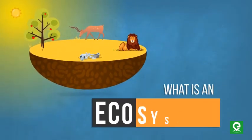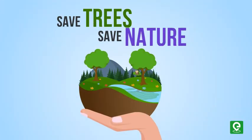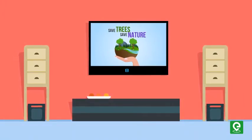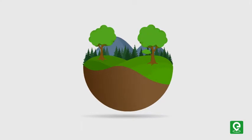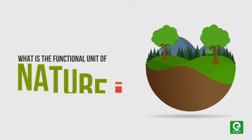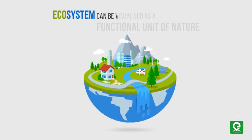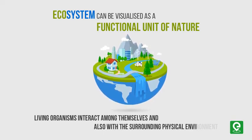What is an ecosystem? You might have seen advertisements on TV showing a healthy and balanced nature with the slogan 'save trees, save nature.' But do you know what is the functional unit of nature? An ecosystem can be visualized as a functional unit of nature where living organisms interact among themselves and also with the surrounding physical environment.